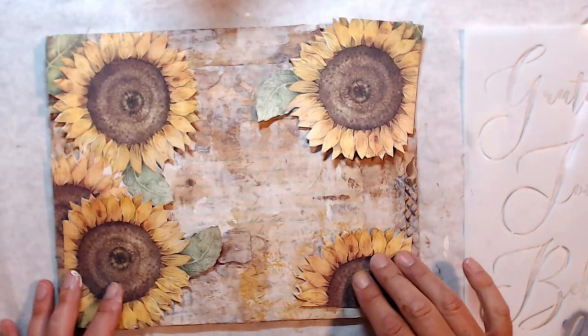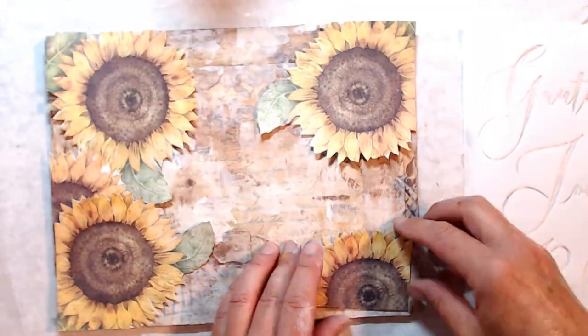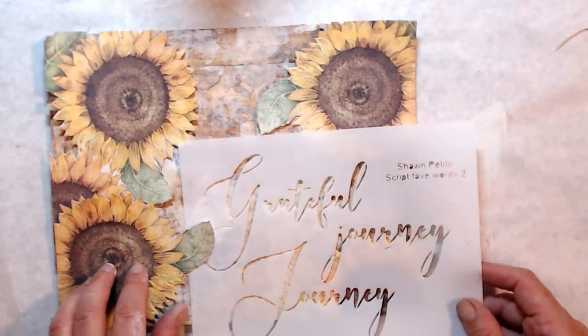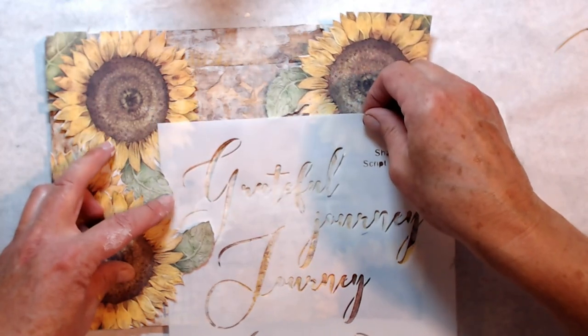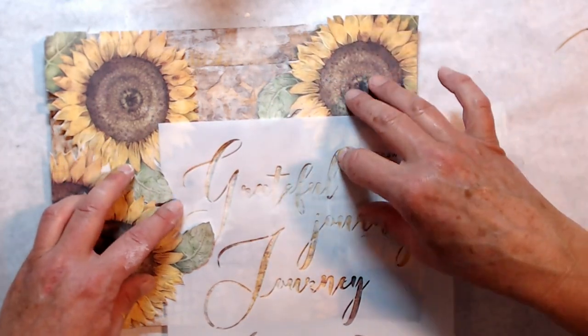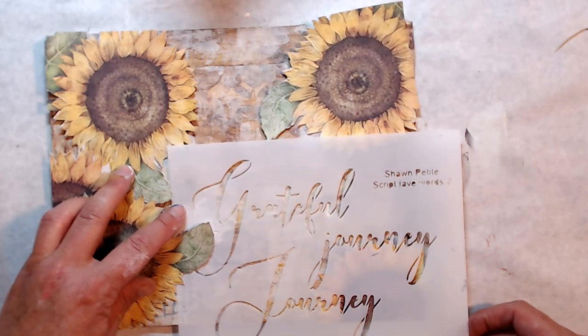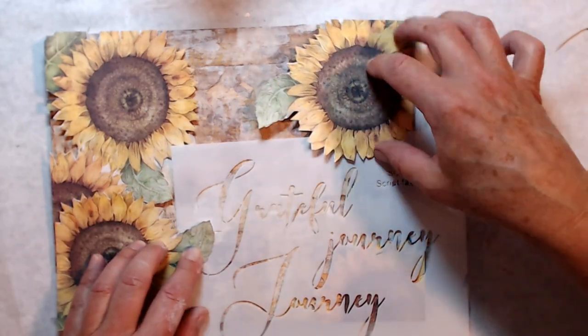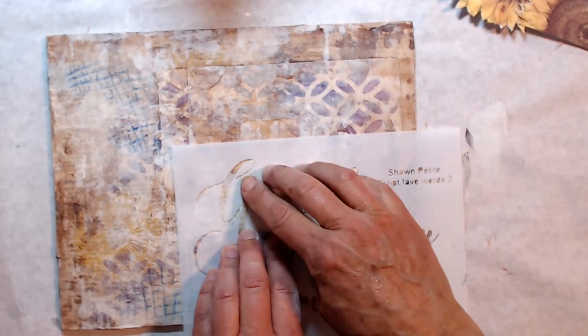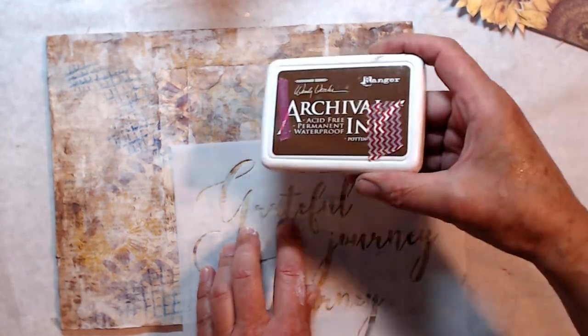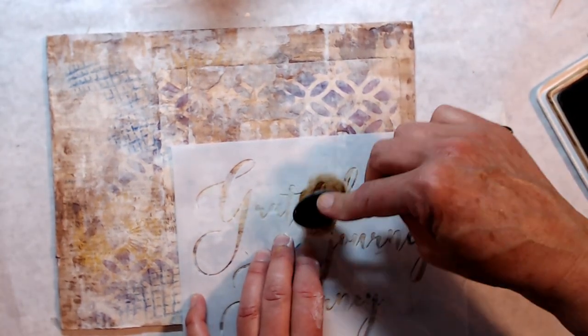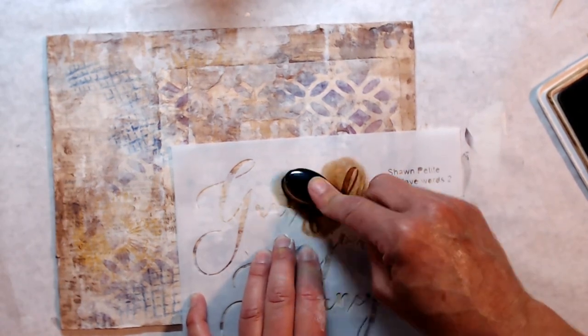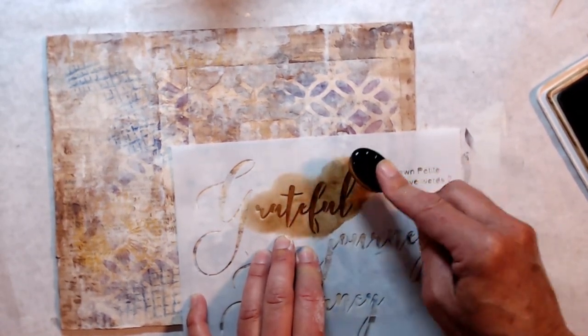I think I got the background the way I want it. I'm going to put down those sunflowers and I'm going to position another stencil by Jean Petit to see where the flowers are going to fall. I want to use that grateful because I have been so blessed and I am so grateful to be able to create every day, talk to you, have some followers on my YouTube channel and be able to sell my art. Even if it is right out of the back seat of my car.